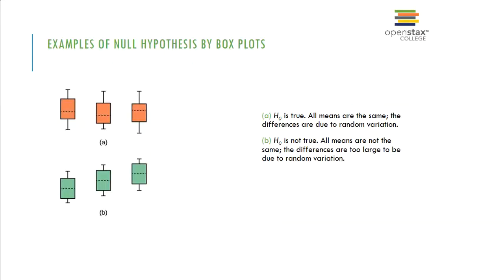So let's look at examples of null hypothesis by box plots. Okay, so for A, right up here in the pink, the null hypothesis is true. All the means are the same, and the differences are due to random variation. But look at B. The null is not true, and the means are not the same. The differences are too large to be due random variations.